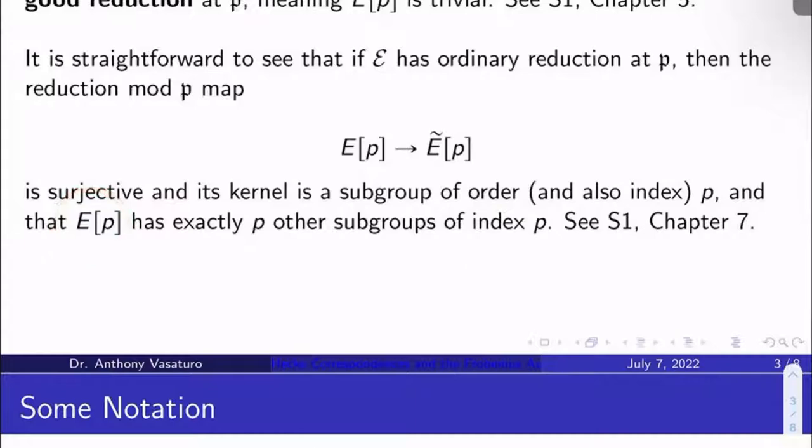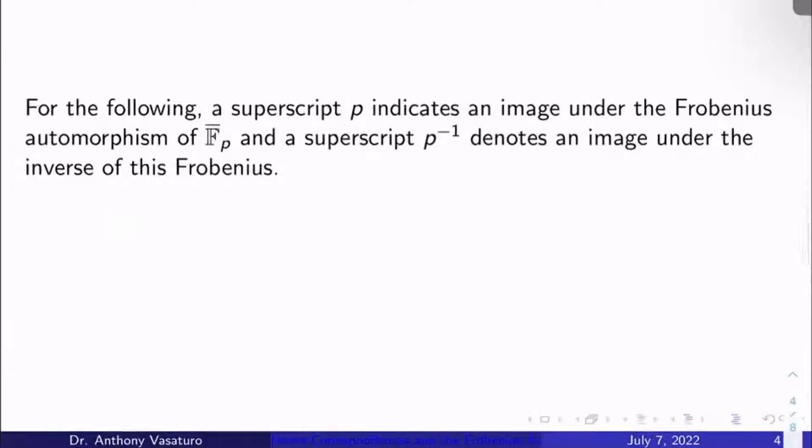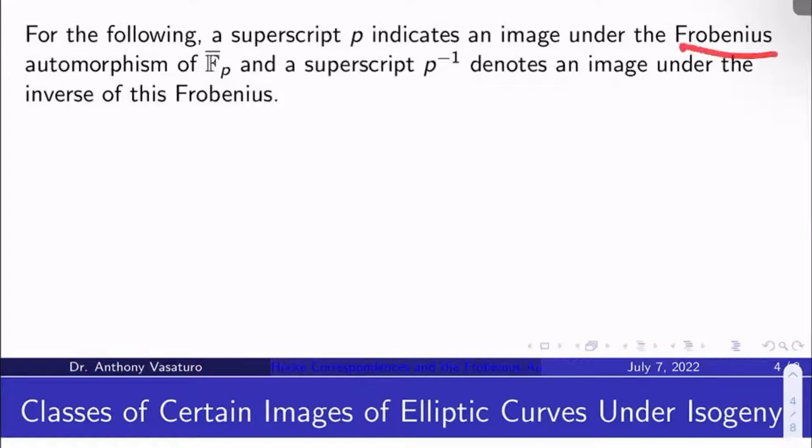So just a little bit of notation for the following slide. A superscript p in the next slide will indicate an image under the Frobenius automorphism of F_℘. So that's the p power map. And a superscript p⁻¹ will denote an image under the inverse of this Frobenius. So the inverse of the p power map.